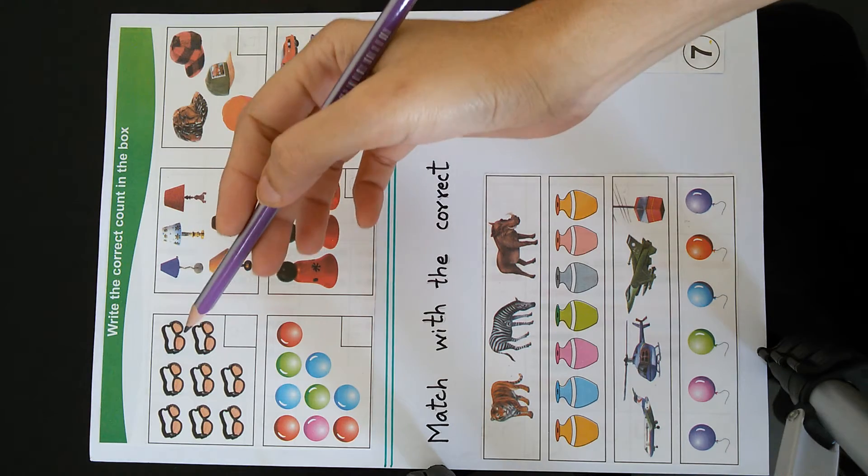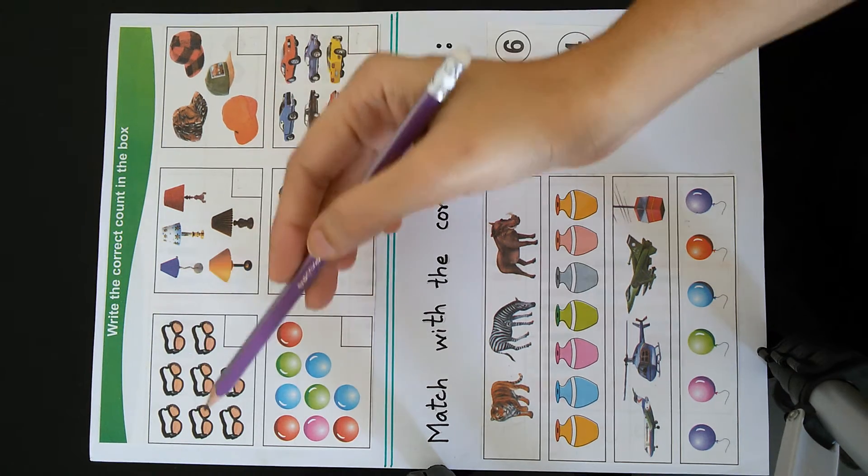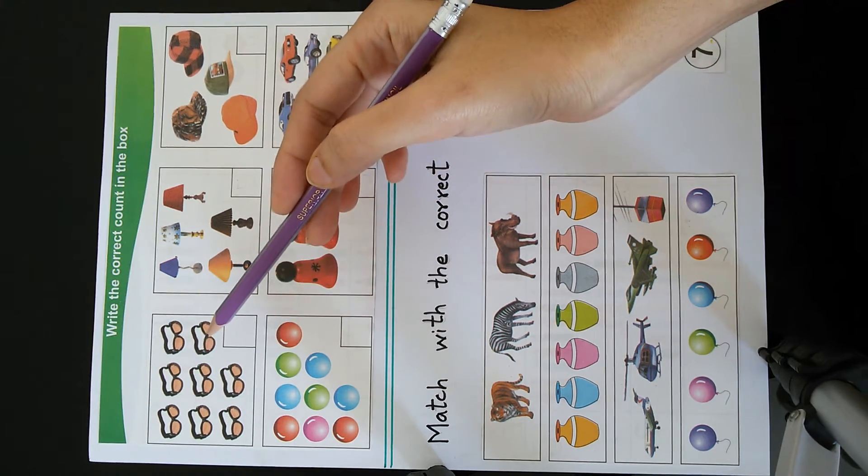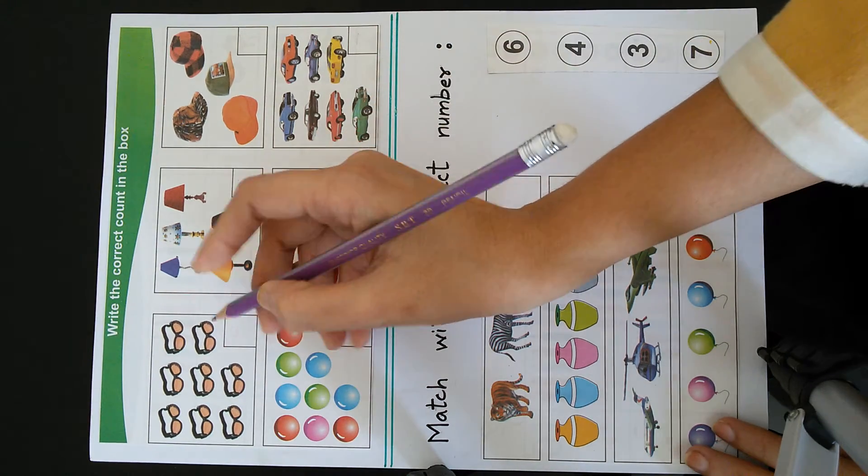The first picture shows specs. We will count them. 1, 2, 3, 4, 5, 6, 7, 8. So we will write the number 8 in the box.